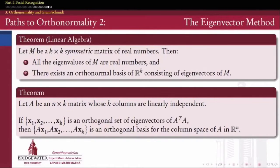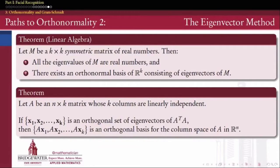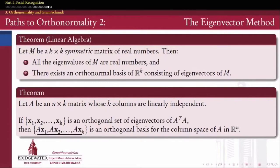So what symmetric matrix should we use? Here's a second theorem. Suppose we have an n-by-k matrix A whose k columns are linearly independent — these columns may come from any basis for a subspace we want to make orthonormal. If we know the eigenvectors of A^T A, calling them x1 through xk, those eigenvectors can be chosen to be orthonormal — or at least orthogonal. So if we have an orthogonal set of eigenvectors for A^T A, which is a symmetric matrix, then to find an orthogonal basis for the column space of A, all we do is multiply those eigenvectors by A.